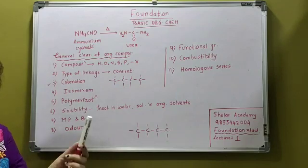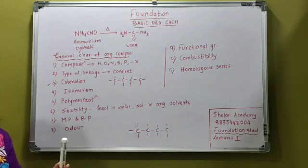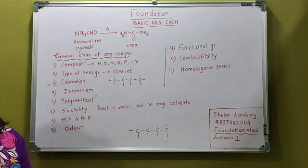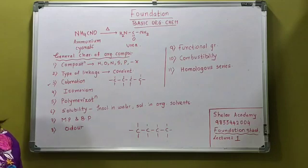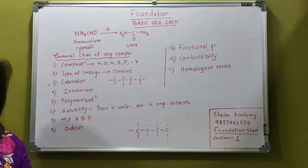For example, which acid is present in ant? It is formic acid. Milk mein kya rehta hai? Lactic acid. Tamarind mein kya rehta hai? Tartaric acid. What is alcohol? Ethanol. So, what are all these? These are all organic compounds, right?